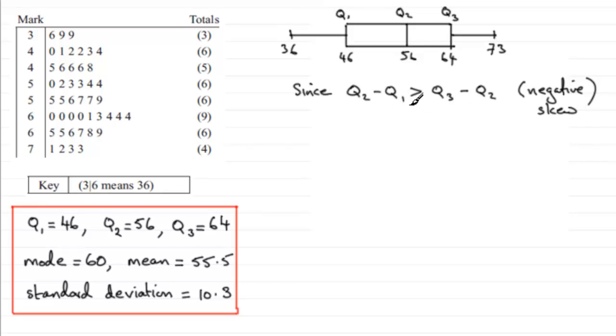It's worth mentioning by the way that if this interval Q3 minus Q2 happens to be greater than Q2 minus Q1, then we've got the opposite of this which is positive skew.